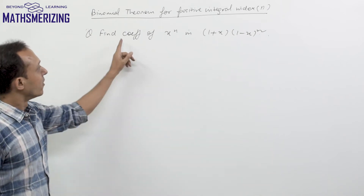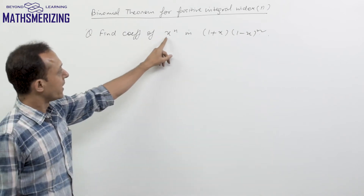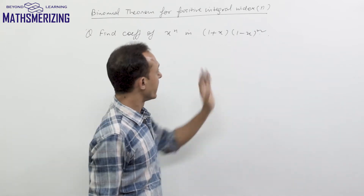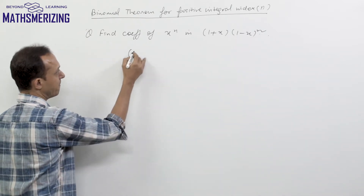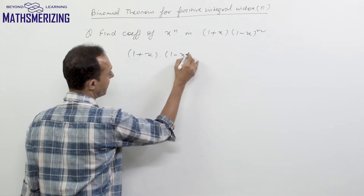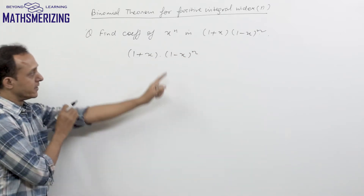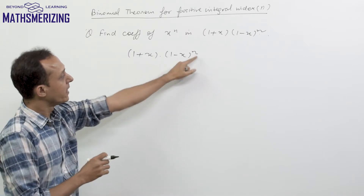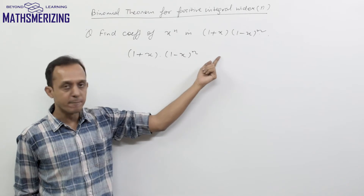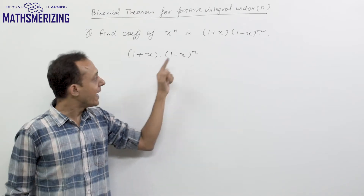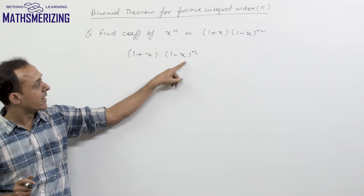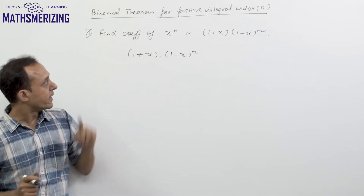Let us find the coefficient of x to the power n in (1+x)(1-x)^n. I'll write it as (1+x) times (1-x)^n. The expansion of (1-x)^n will contain powers starting from x^0 all the way up to x^n, and all these terms will get multiplied with (1+x).